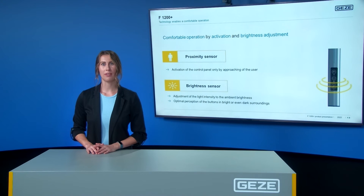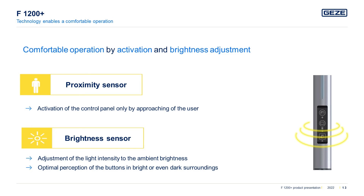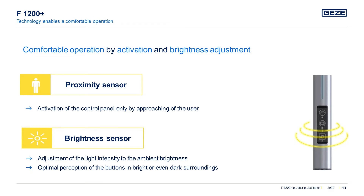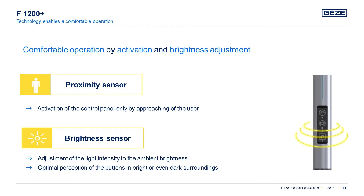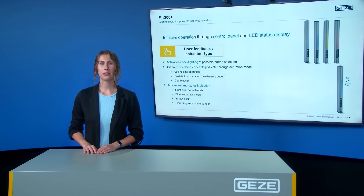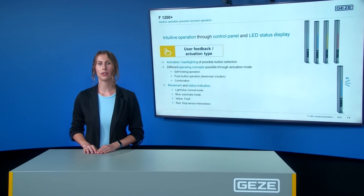To make operation even more convenient, sensors such as the proximity sensor and the brightness sensor have been integrated into the control panel. The control panel is automatically activated when the user approaches, and the brightness of the buttons is adjusted to the brightness of the environment, so buttons are optimally perceived in both bright and dark environments. When activated by the proximity sensor, only the buttons for available actions are lit up, guiding the user and preventing incorrect operation or unintentional unhooking of the sash.